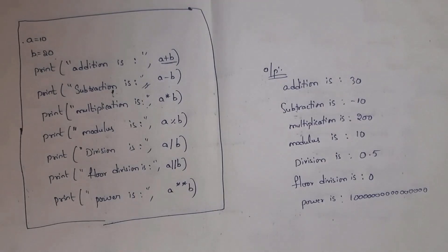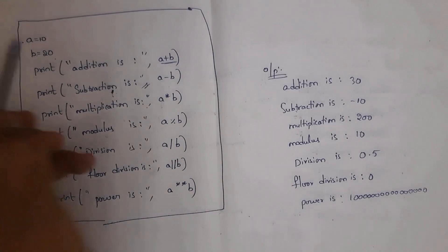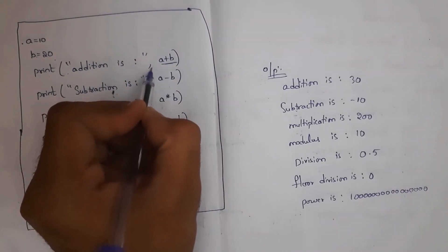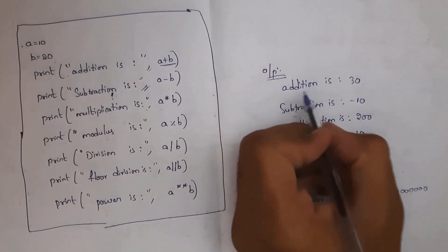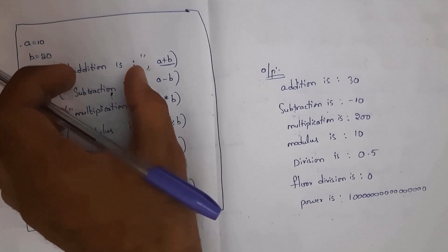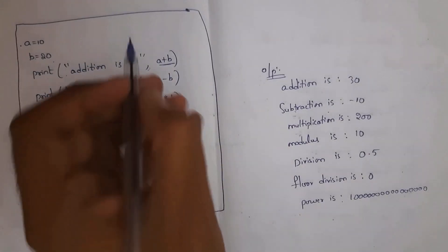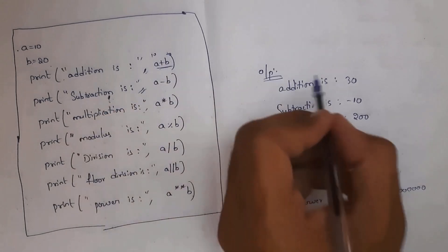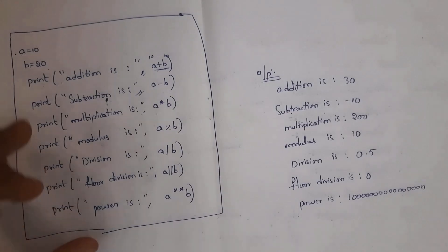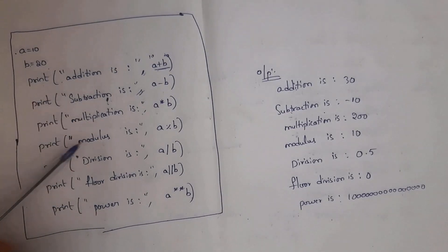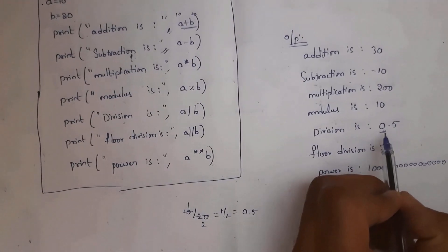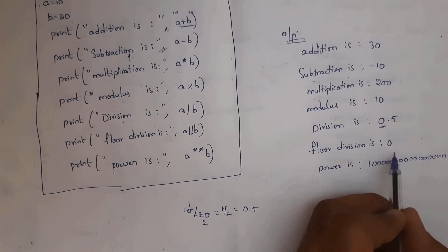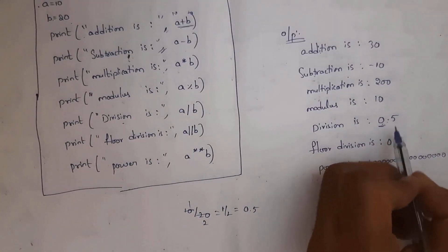In the Python program for arithmetic operations, a = 10 and b = 20. Using print with comma notation: print("addition is", a + b) outputs 'addition is 30'. Similarly for subtraction, multiplication, modulus, division, floor division, and power. For division, 10 / 20 outputs 0.5 as a float. For floor division, it considers only the integer value, so it outputs 0.